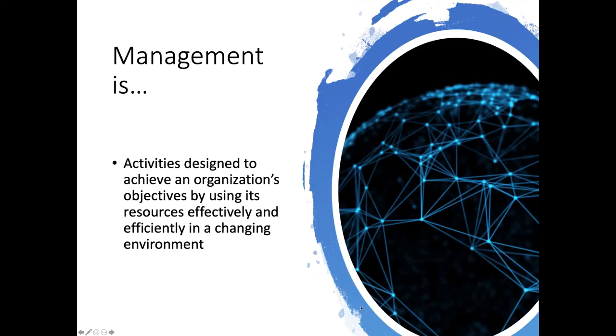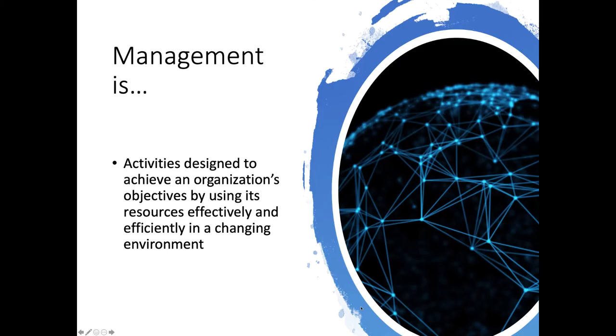You may remember at the end of the first lecture, we defined management as activities designed to achieve an organization's objectives by using its resources effectively and efficiently in a changing environment. This is a very important definition — you should probably get this tattooed somewhere, at least for this semester. Here it is on the screen: activities designed to achieve an organization's objectives. Management happens in organizations that have goals and objectives they're trying to achieve.